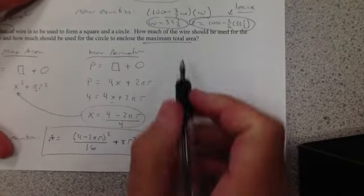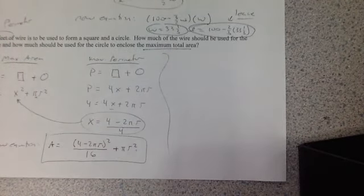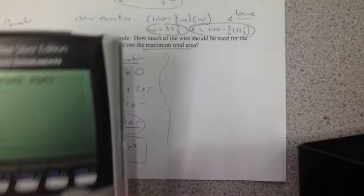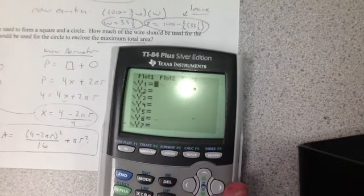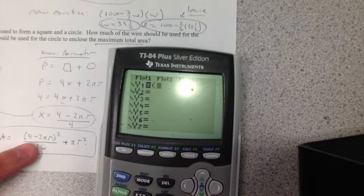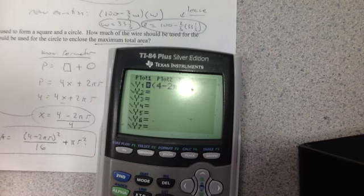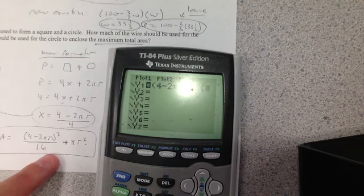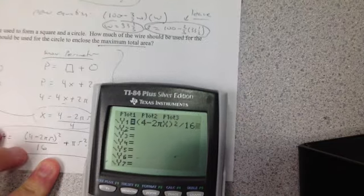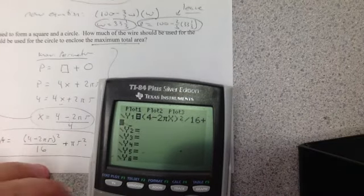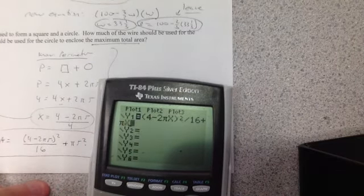And now I can solve it by graphing it on the calculator. So I already cleared out my memory. Go to y equals. I just typed this in. It's not very pretty. Parentheses, don't forget. 4 minus 2 pi r. We're going to use x. Squared. Divided by 16. Don't need a parenthesis for that one. There we go. Sorry about that.